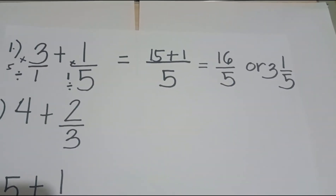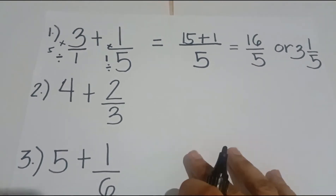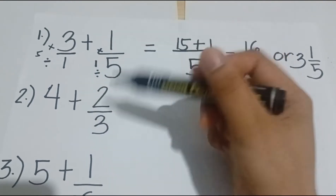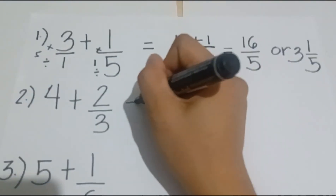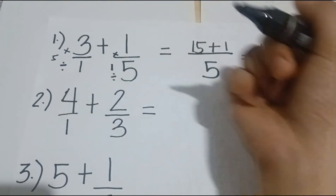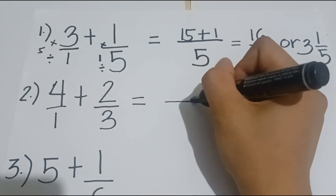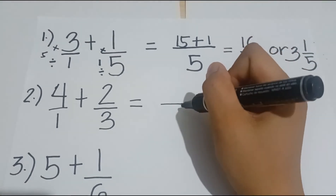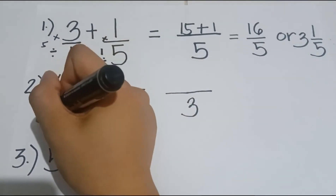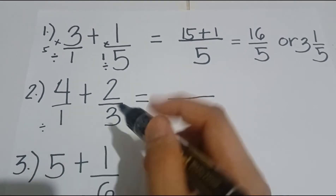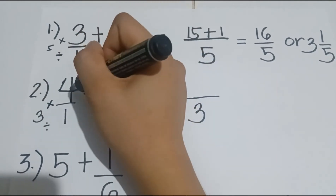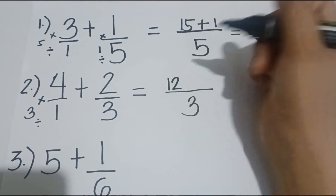Next example, number 2: 4 plus 2 thirds. First step, we find the LCD of the two fractions. We add 1 as the denominator for 4. So the LCD is equal to 3. Then 3 divided by 1 is equal to 3, and we multiply by the numerator, which is 4. So 3 times 4 gives us the answer of 12.